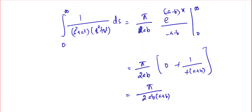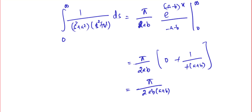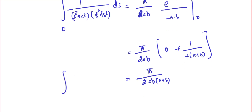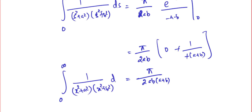So the left-hand side was simply the integral from 0 to infinity of 1/(s² + a²)(s² + b²) ds, which is exactly what we wanted. Since the variable of integration doesn't matter in a definite integral, we can replace s by x, giving the final answer: the integral from 0 to infinity of dx/[(x² + a²)(x² + b²)] = π/[2ab(a+b)].